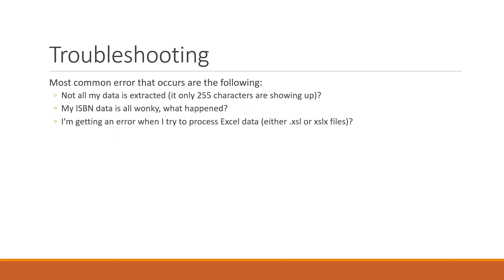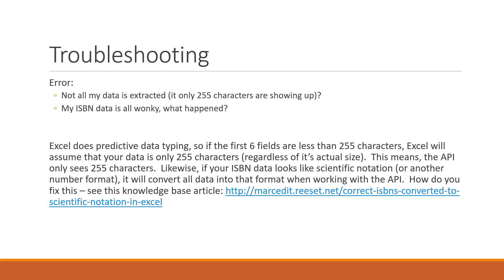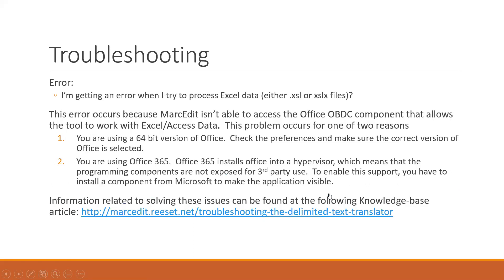The native driver reads deeper into the Excel file and determines data types based on actual data, so there's less of a problem there. For ISBN data, same thing — ISBNs look like scientific notation data. If those first six values don't include an X or alphanumeric characters, they get typed as scientific notation. There are help files showing how to convert the column data type in Excel to fix this. This was a problem that showed up a lot in MARCEdit 6 and will still show up if you're using the legacy ODBC driver.